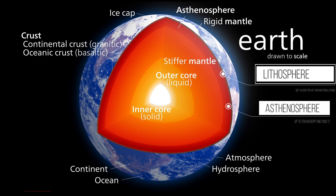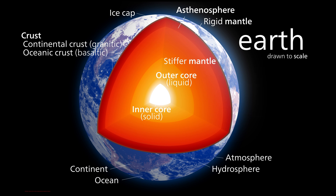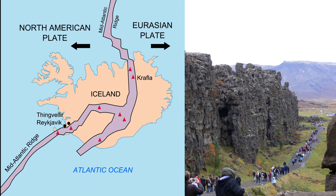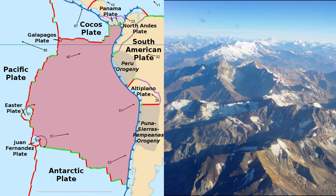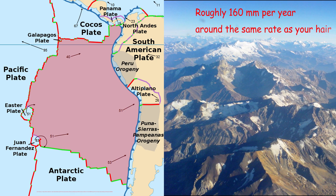As the lithosphere is more rigid, the tectonic plates float and move on top of the liquid-like asthenosphere. Plate movements can vary from 10 to 160 millimeters per year. The mid-Atlantic ridge, for example, grows at roughly the same rate as fingernails. Whilst the Nazca plate shrinks at roughly the same rate as hair grows.